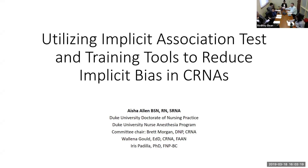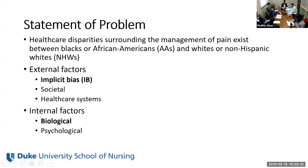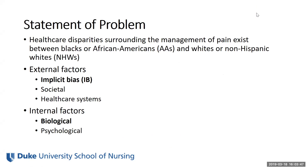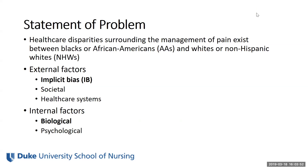The title of my DMP project is: Utilizing the Implicit Association Test and Training Tools to Reduce Implicit Bias in CRNAs. I knew early on that I wanted my DMP work to be about the documented healthcare disparities of African Americans. There are healthcare disparities surrounding the management of pain between Blacks or African Americans and Whites or non-Hispanic Whites. These differences are expected to be the result of a combination of internal and external factors — patient characteristics and provider characteristics.